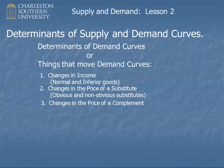Kind of like the opposite of substitutes would be complements — the price of complements. Complements are two things that you use together, like hot dogs and hot dog buns. A technical definition: goods A and B are complements if when the price of A goes up, the demand curve for B goes down. So if hot dogs got very expensive, the demand curve for hot dog buns would go down.